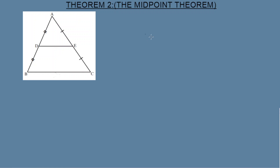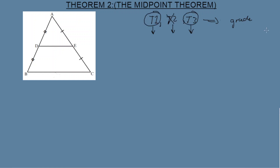Theorem number two: the Midpoint Theorem. In the description box are links for Theorem One, the Proportionality Theorem, as well as Theorem Three. In Grade 12 we focus on three theorems involving triangles: the Proportionality Theorem, the Midpoint Theorem, and the Similarity Theorem. Theorem Two will be covered here; Theorems One and Three are in the description box.